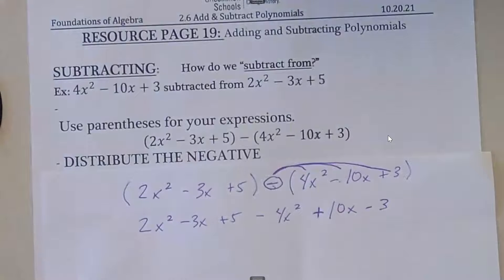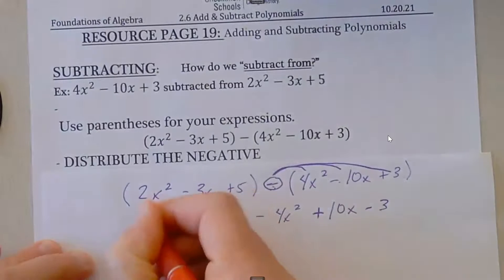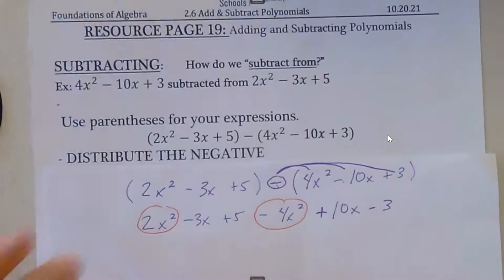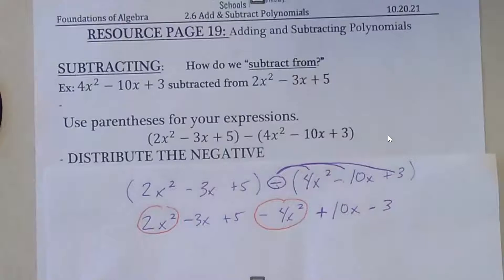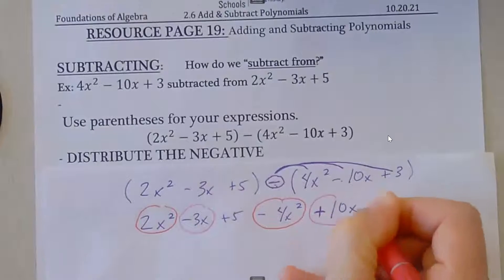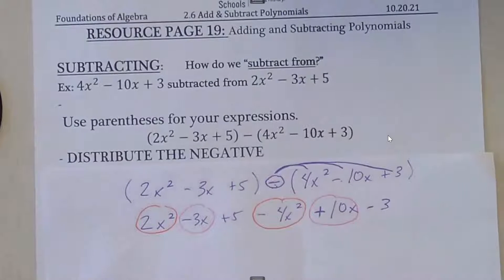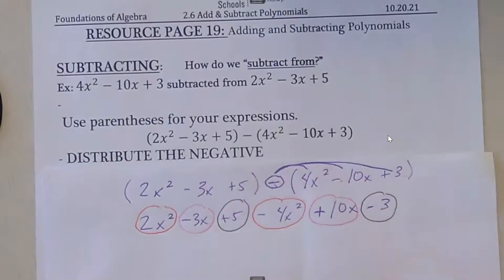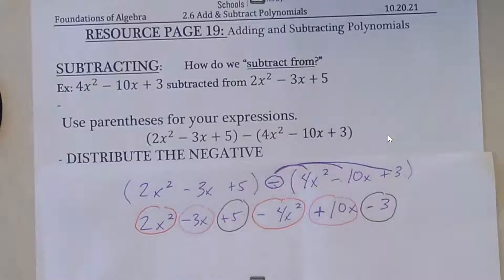The next thing we need to do is to combine like terms. So I have my x squared terms—remember the signs. And I have my x terms—remember to include the signs. Remember to include the sign.